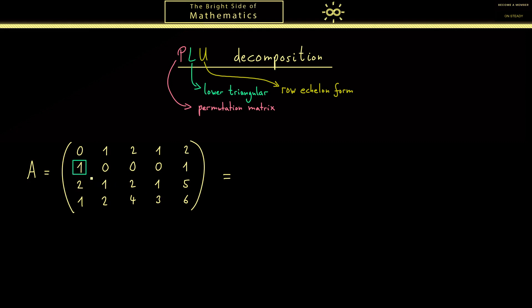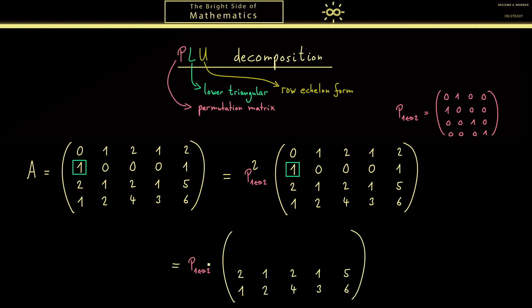Okay, we find it in the first row, therefore we need to exchange the first and the second row. Now a permutation matrix that exchanges row 1 with row 2 looks like this. It's simply a 4 times 4 identity matrix where we flip the two rows we are interested in. An important property is now if we square that matrix, we get out our identity matrix. Hence this is our first step: we just apply the identity matrix on the left, then in the next step we multiply one of the two matrices to the right, which means we exchange the two rows here. Afterwards we have our pivot at the correct position.